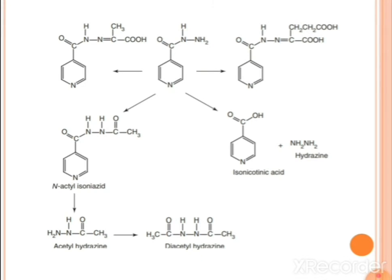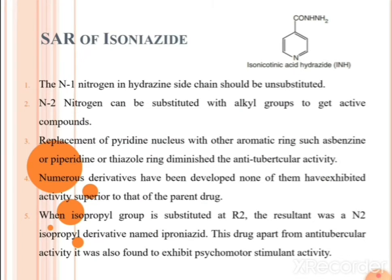A schematic representation of isoniazide metabolism is shown. At the center is isoniazide. The first major metabolite is N-acetyl isoniazide; another metabolite is isonicotinic acid; this is further hydrolyzed into acetyl hydrazine, which is then converted into diacetyl hydrazine. This completes the metabolic pathway of isoniazide.